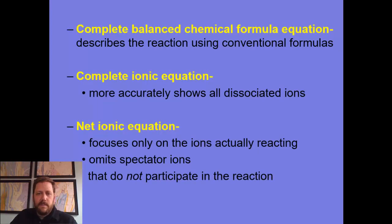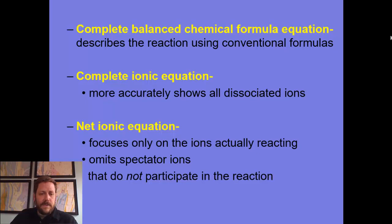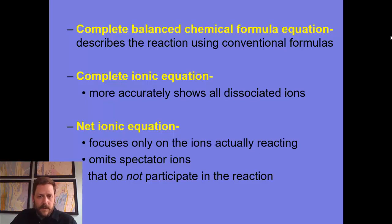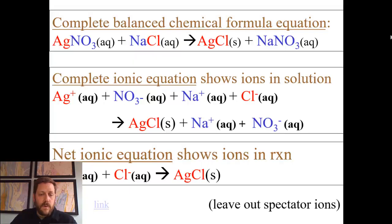So we have three steps. First, the complete balanced chemical formula equation — sometimes called the molecular equation — is the conventional way to write chemical equations. Second, the complete ionic equation shows all dissociated ions, even the ones that don't react; this step is optional but recommended for practice. Third, the net ionic equation focuses only on the ions that are reacting — we omit the spectator ions. You'll also be asked to identify which spectator ions can be omitted.